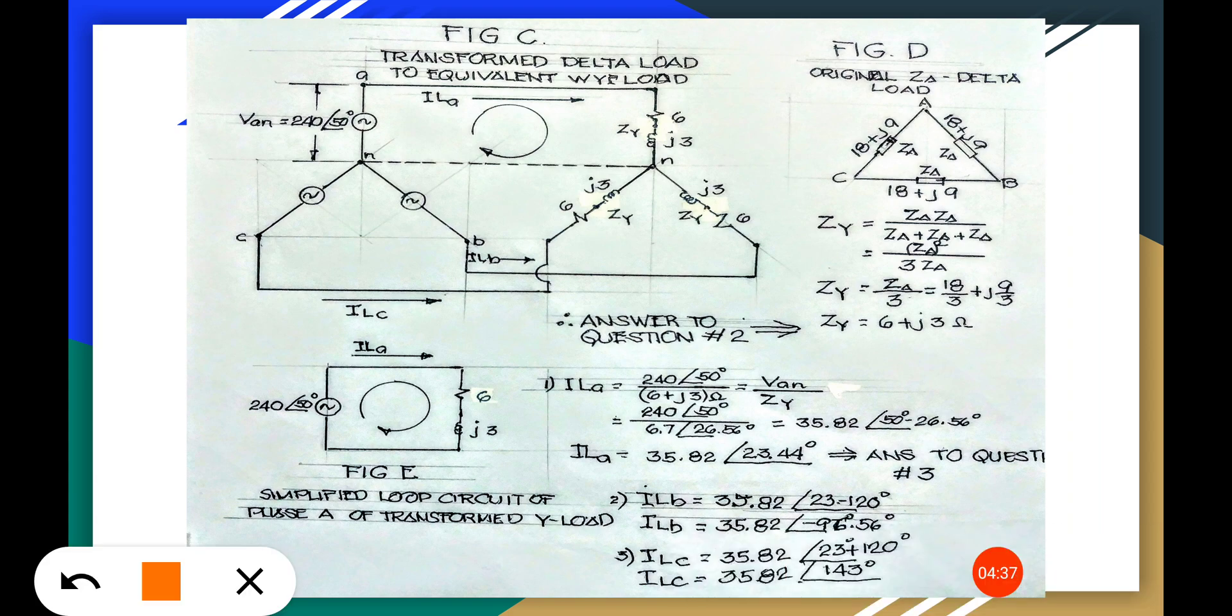This one is 6 plus j and this is the one here for the Wye source transform transformation.